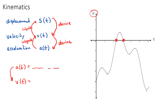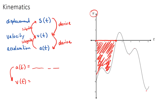Another common question is: what is the total distance traveled, given a velocity curve? The total distance is related to displacement, which is the integral of velocity — so we find the area under or above the curve using integration techniques.